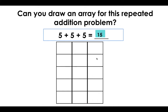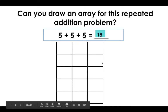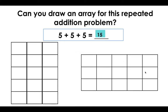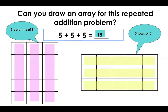Now I could have drawn a different array. Maybe you drew an array that looked like mine, or maybe you drew an array that looks like this. The question is: are both of these arrays correct to show five plus five plus five? They are. This array shows three columns of five — I can count by five: five, ten, fifteen. Both arrays show the same thing.